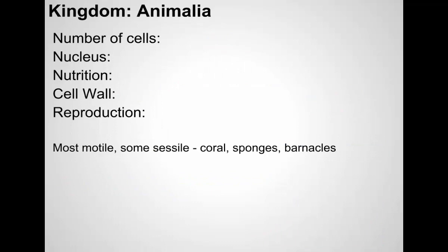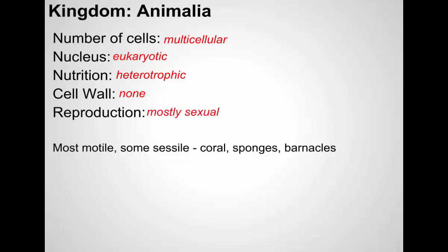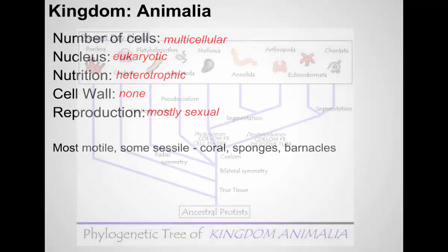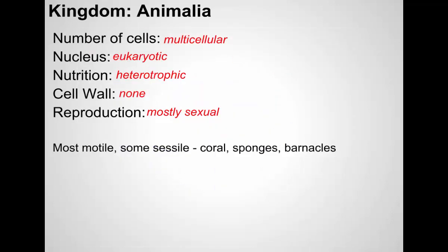Then we return to our last kingdom — Kingdom Animalia, the animal kingdom. Animals are multicellular, eukaryotic, and heterotrophic. They do not have a cell wall. Most reproduce sexually, but there are some that can reproduce asexually. Most are motile — they move around from place to place — but not all. Some are sessile, meaning they're stuck in place for most of their lives, like barnacles, coral, and sponges.